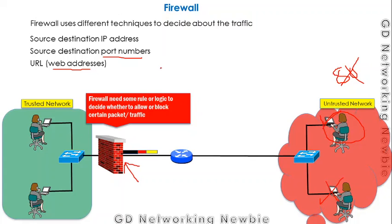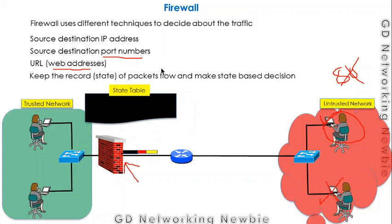Firewalls can also keep a record of packages associated with some connection. For example, if some user is making a connection from the trusted network to the untrusted network, the firewall can keep a record or historical information in a state table.